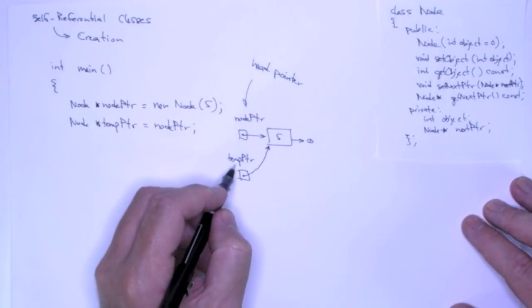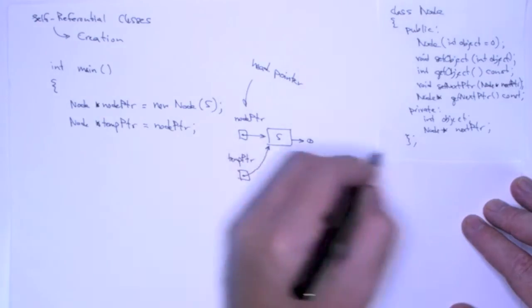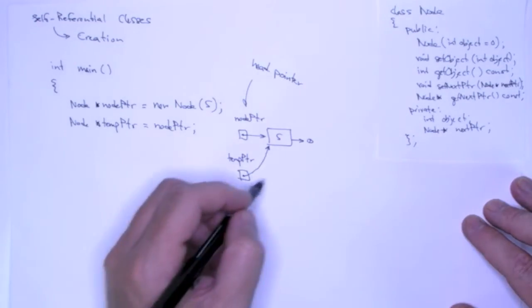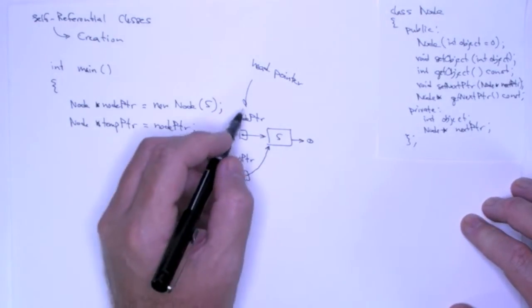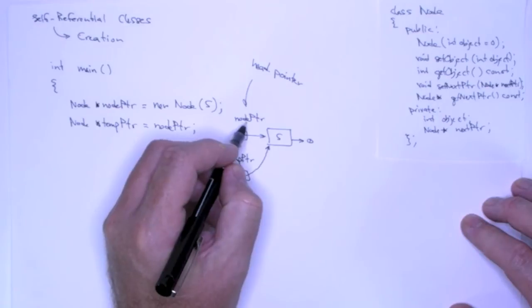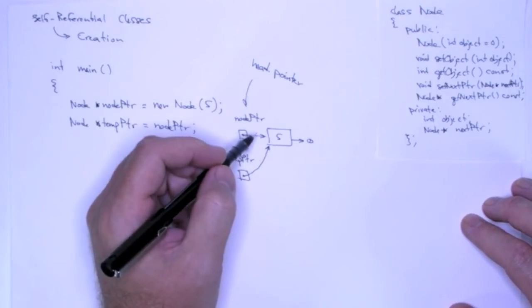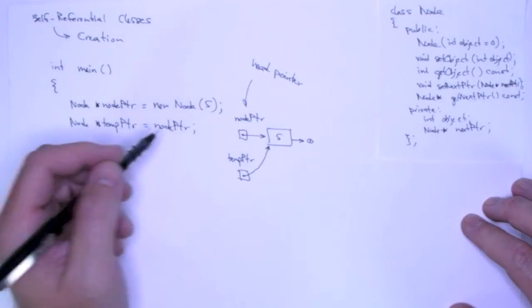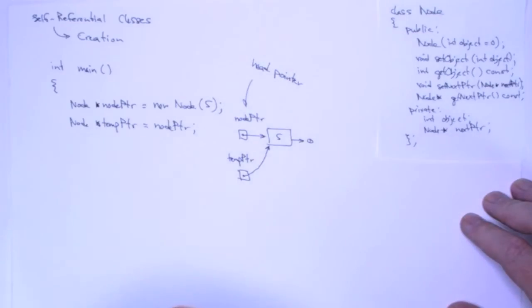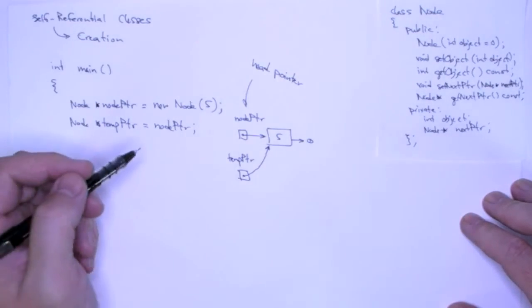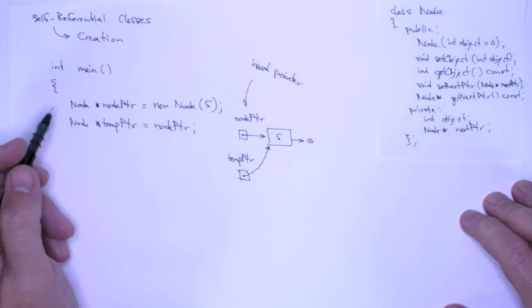And frequently we'll have another pointer, in this case temp pointer, that we use to actually do traversals, that we actually use to add to the end of the list, and things like that. So, now I'm going to contradict myself when we start destructing this list, we're going to use node pointer. But at the point of destruction, we don't really care, right? We don't care about the head pointer because we're destructing the list. But while we're building the list, while we're manipulating the list, during the program execution, we always have to maintain the integrity of that head pointer.